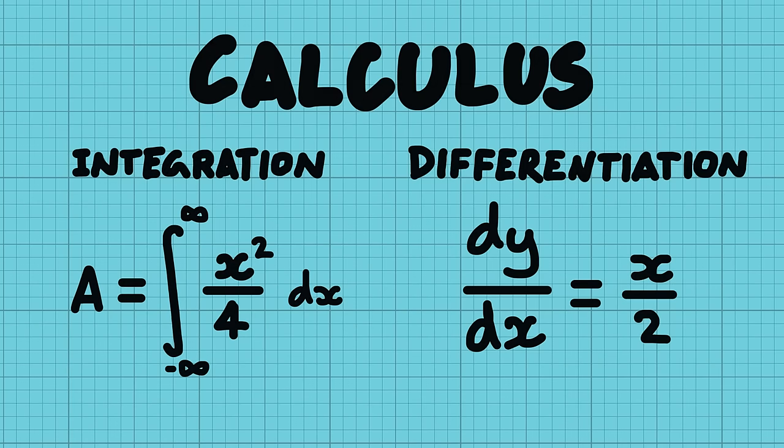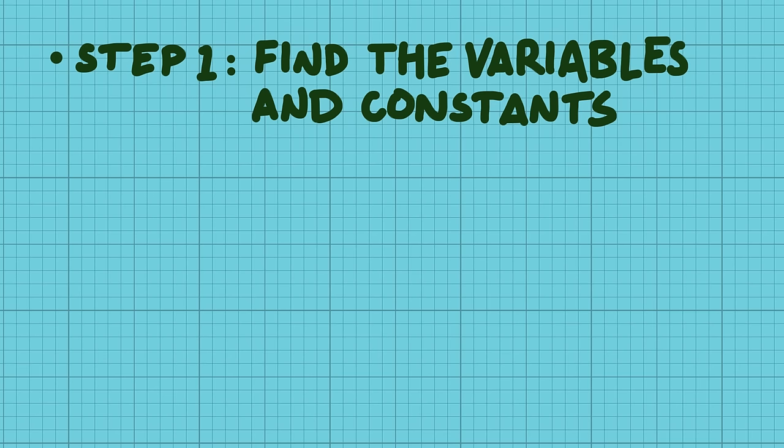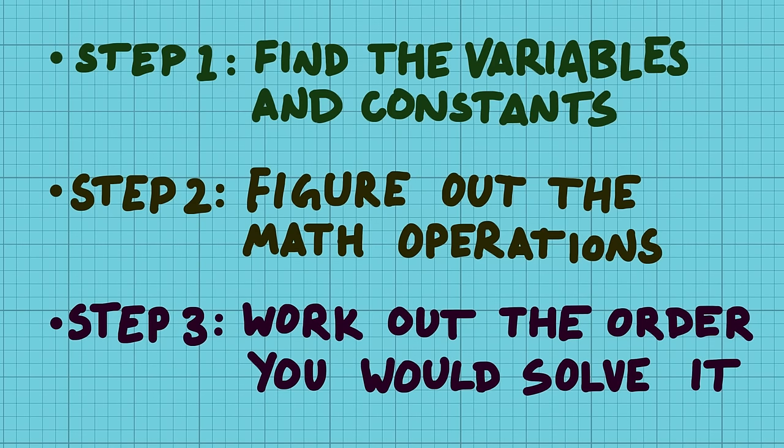So those are the basics of how to read mathematical equations. Step 1, find the variables and constants and what each one represents. Step 2, work out what all the weird mathematical operations are. And step 3, work out what order you'd solve the equation in if you put in the numbers.